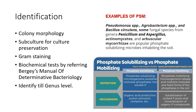For identification: after selecting your isolate, examine colony morphology, then subculture for culture preservation, perform Gram staining and biochemical tests by referring to Bergey's Manual of Determinative Bacteriology, and try to identify your isolate at least to genus level. Some examples of phosphate solubilizing microorganisms are Pseudomonas, Agrobacterium, Bacillus, and fungal species like Penicillium, Aspergillus, and even some Actinomycetes and Arbuscular Mycorrhiza.